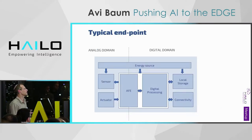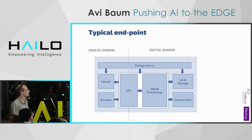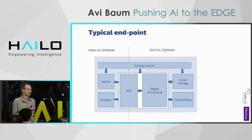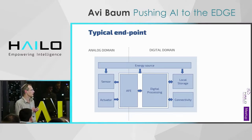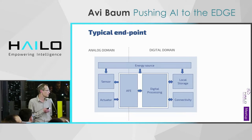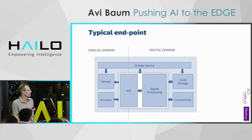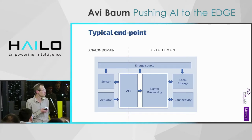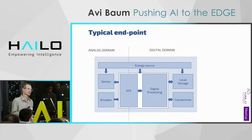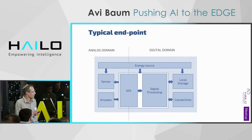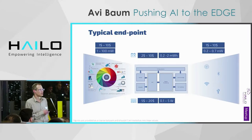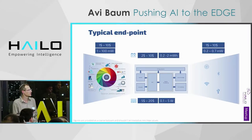Let's look into a typical endpoint of an edge device. Typically there is a physical world — the analog domain — where you have sensing and actuation, then some kind of transition to the digital domain with processing and decision making, and either storage or connectivity to another endpoint. There is also an energy source to power the entire device. To give a ballpark for each of those components, the sensing element ranges today — and these numbers are not min-max, but they give you a sense of what an edge device looks like.